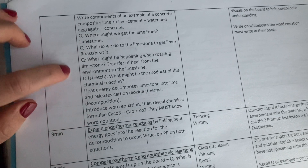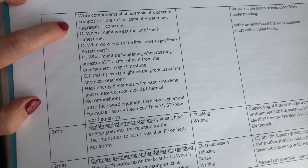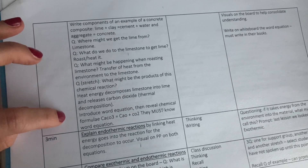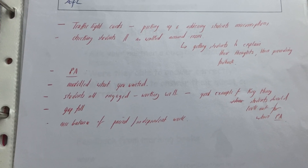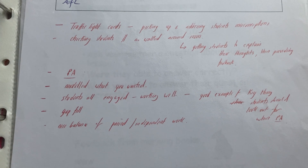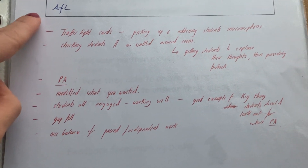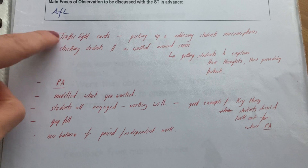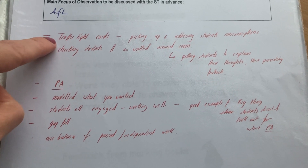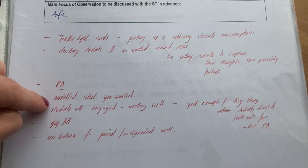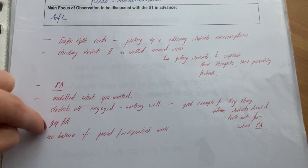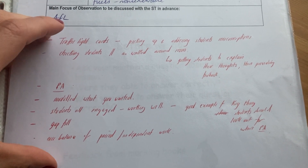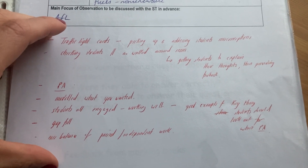For assessment for learning you can see how I've planned for the different questions I wanted to ask — this really met that criteria for questioning under teaching standard six. There's also more evidence from an observation form that a teacher filled out when she observed my lesson, for example showing me using traffic light cards, peer assessment, modelling, and doing gap fills — all really useful evidence for teaching standard six.